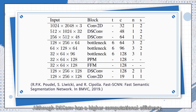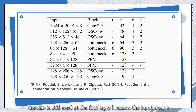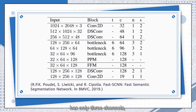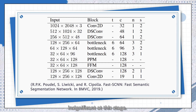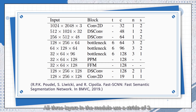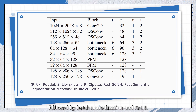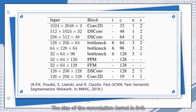Although DS-Conv has a higher computational efficiency, Conv2D is still used as the first layer because the input image has only three channels, which makes the computational benefit of DS-Conv insignificant at this stage. All three layers in the module use a stride of 2, followed by batch normalization and ReLU. The size of the convolution kernel is 3x3.